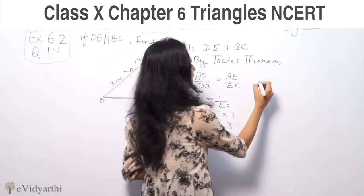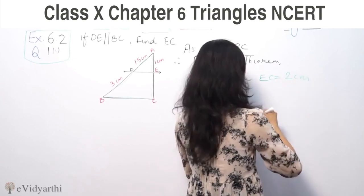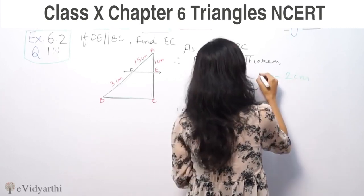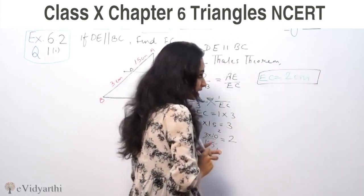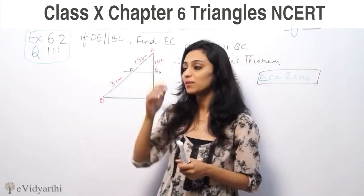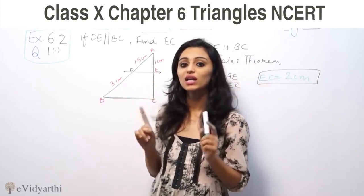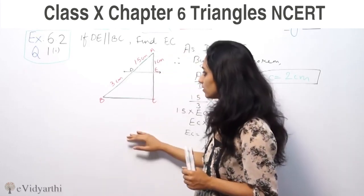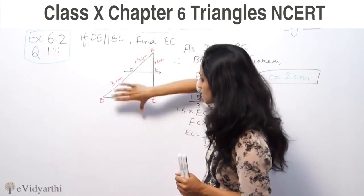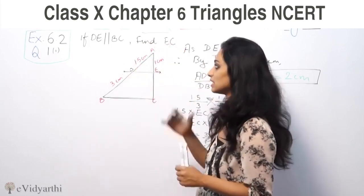So we have EC value as 2 cms. This is the answer. One thing you have to keep in mind: in case any value is in different units, you have to first make the units equal, then find it. When the line is parallel, you can take the ratio AD upon DB equals AE upon EC.